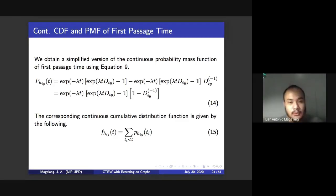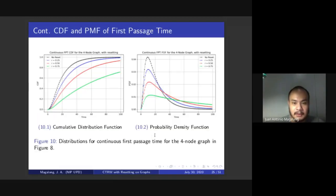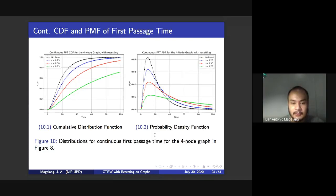We can use the equation earlier for continuous time to simplify this and obtain a continuous first passage time with the corresponding cumulative distribution function. And they have these plots as well.